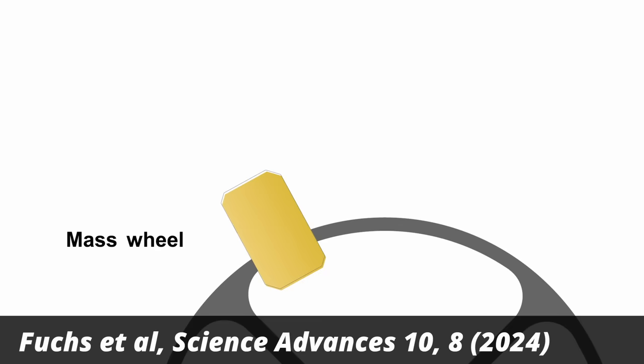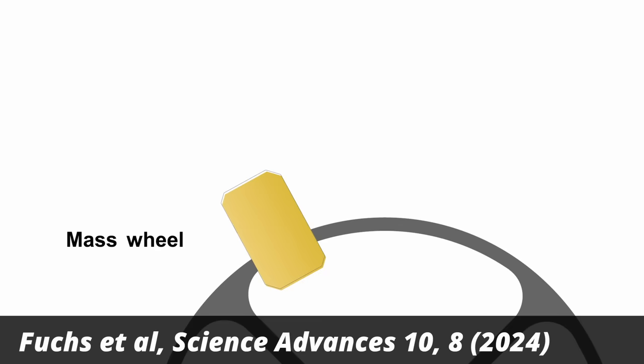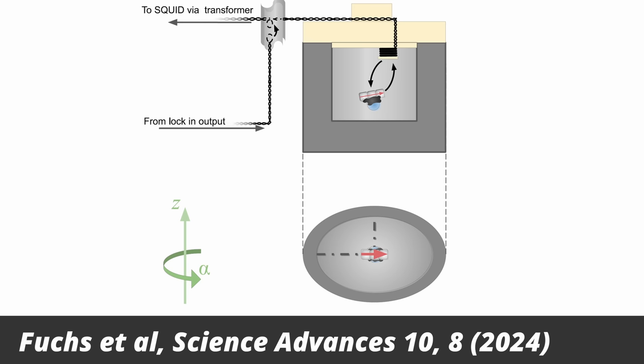Then they take a fairly heavy weight of about 2.4 kilograms, put it on a wheel, rotate the wheel, and move it from one side to the other of this container with the levitating magnet. The thing is now that the gravitational pull from the moving weight should affect the levitating magnet.